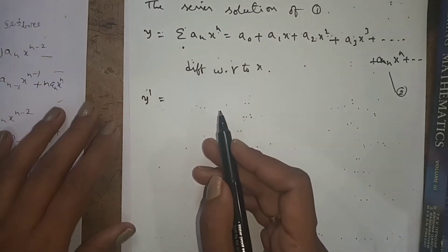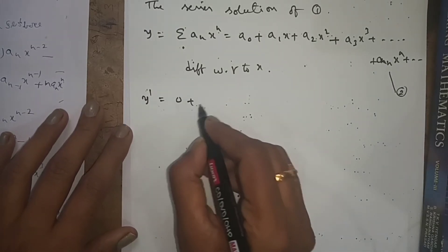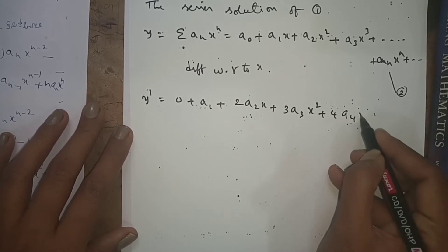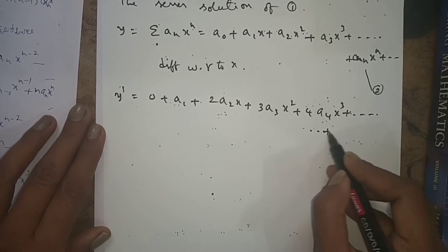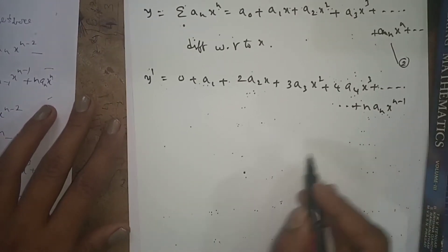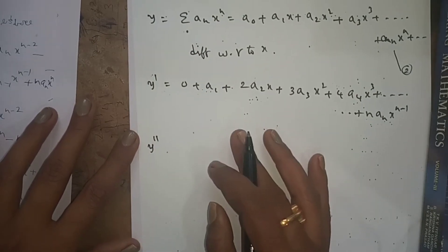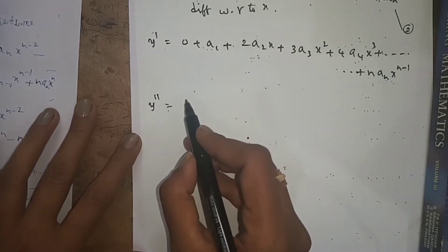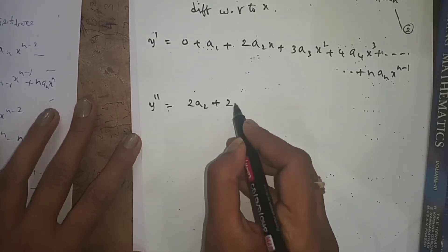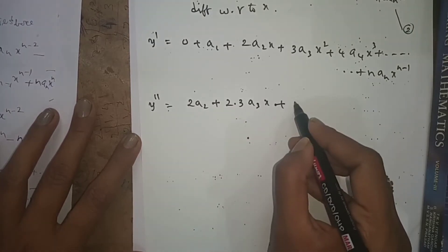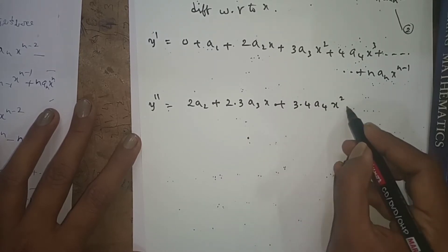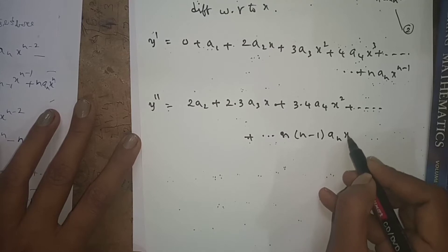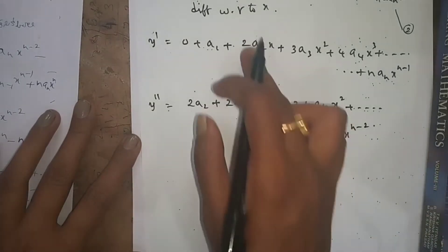Differentiating once: y dash equals a₁ plus 2a₂x plus 3a₃x² plus 4a₄x³ plus and so on, with nth term n·aₙ·xⁿ⁻¹. Differentiating again: y double dash equals 2a₂ plus 2·3·a₃x plus 3·4·a₄x² plus and so on, with nth term n(n-1)·aₙ·xⁿ⁻². Now we have both y double dash and y values to substitute into equation 1.